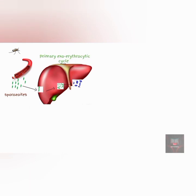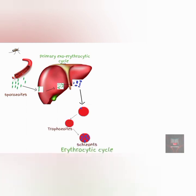The merozoites then leave the liver and enter the red blood cells. They then form ring-shaped trophozoites, and finally they form the schizonts. This stage is known as the erythrocytic stage because it is taking place inside the red blood cell.